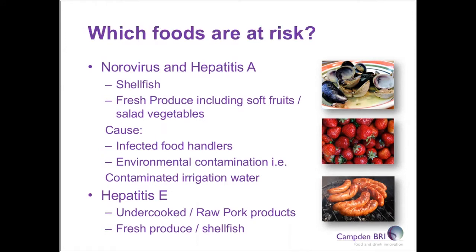The main foods at risk from these viruses are foods eaten raw or minimally processed, such as shellfish, raw salad vegetables, and soft fruits. The main causes of contamination are sewage-contaminated irrigation water and contaminated handlers' hands. In the case of hepatitis E, contamination comes from blood in pork livers and various other muscle tissue in pork products. If these are eaten raw or minimally processed, there is a chance of infection. For pork, thorough cooking will eliminate the risk, though there is very little data on the actual heat profile for hepatitis E.